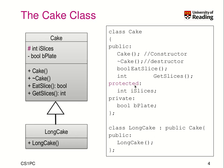Member functions have access to any variable, any data member. Here the data members are iSlices as an integer and bPlate. So we have our methods, which are operations that we can do. This was a base class, and when we try to inherit from it, we can add a new class called longcake. We use the colon to indicate from which class we will inherit. A longcake has basically the same members as the class cake, plus it has its own constructor.